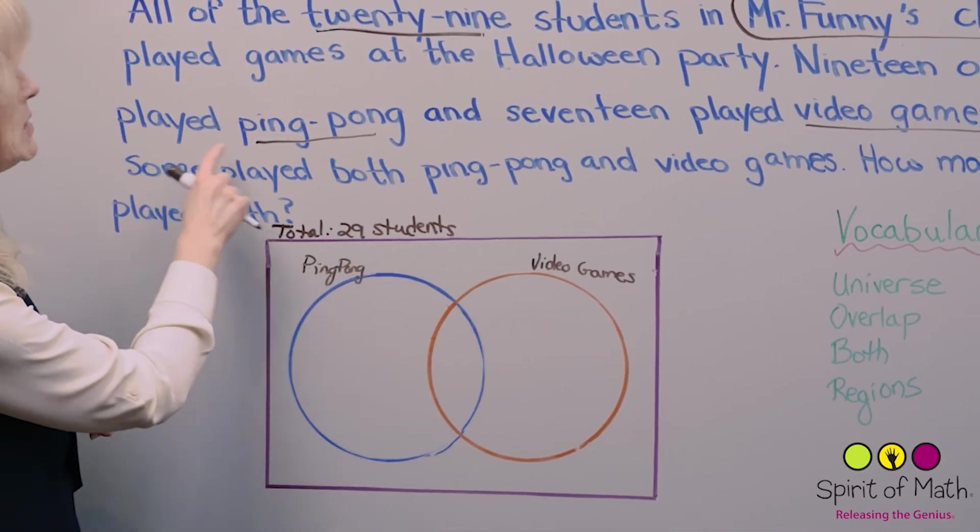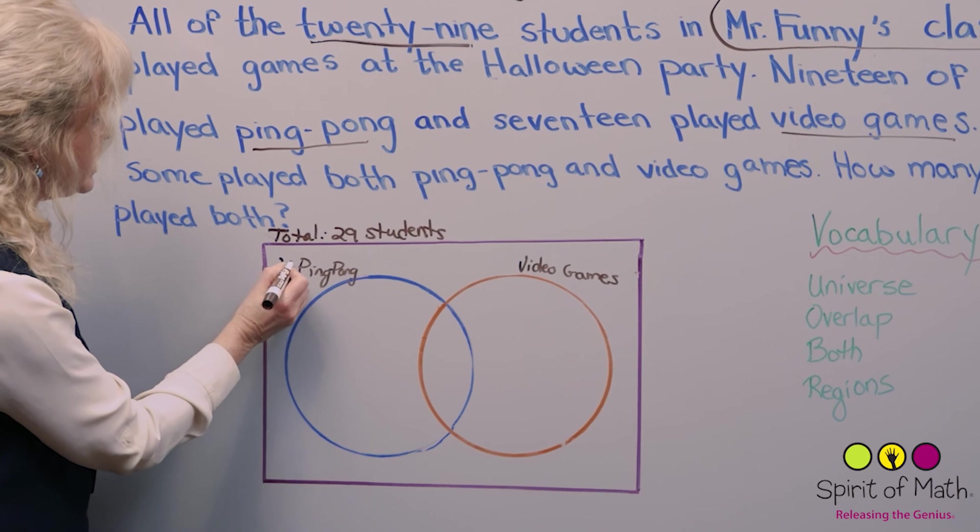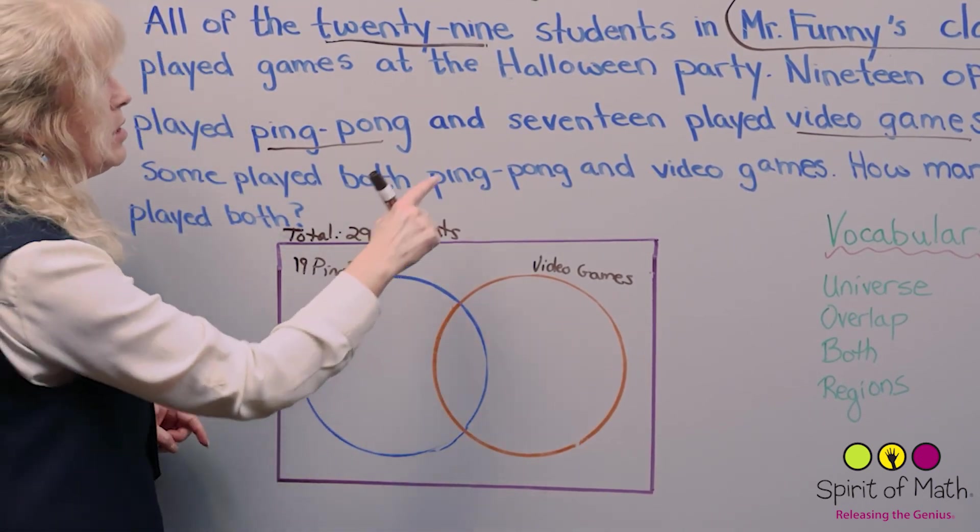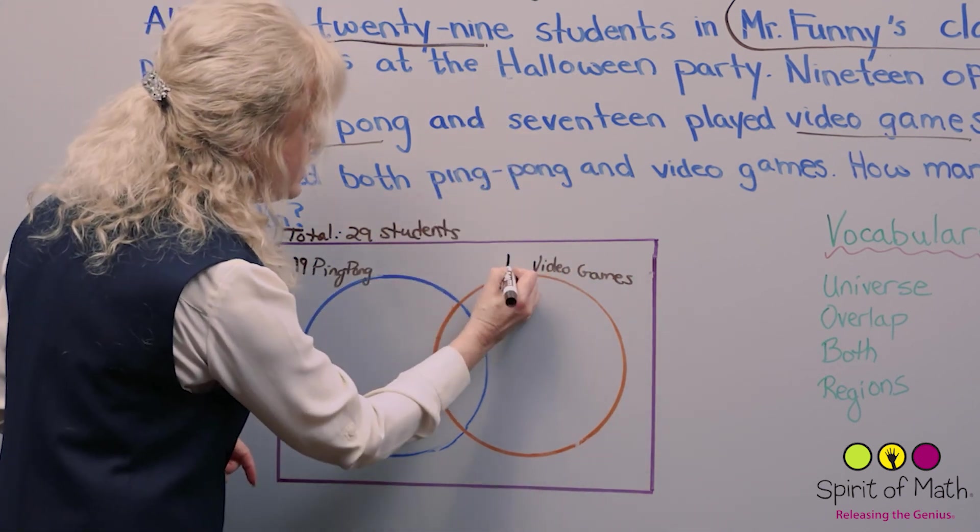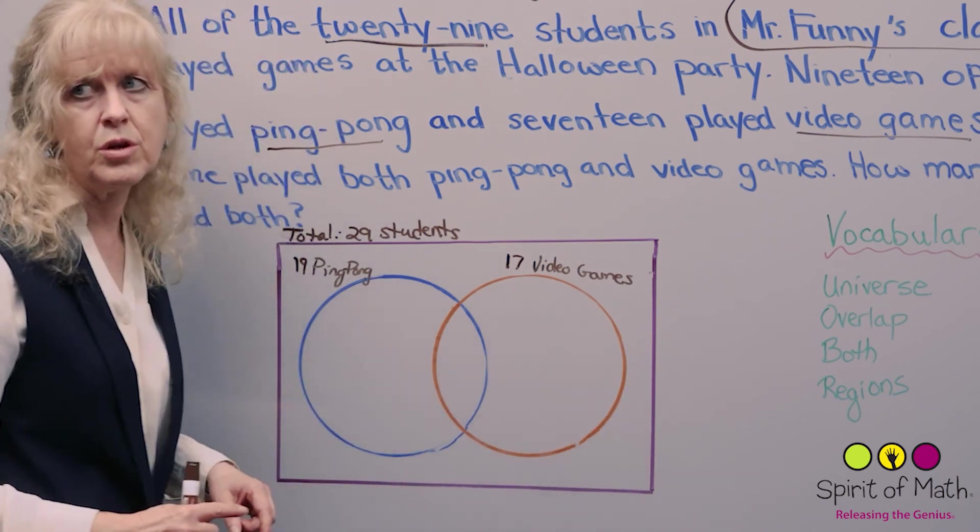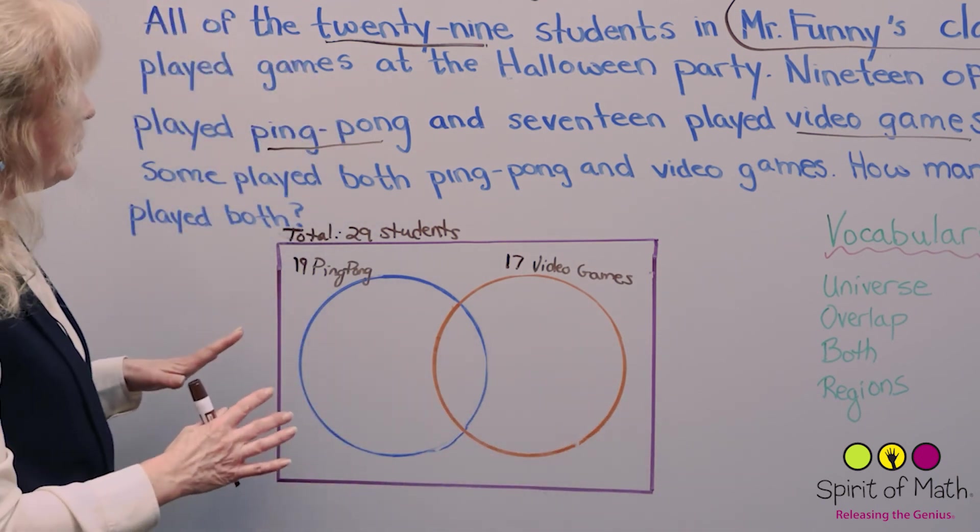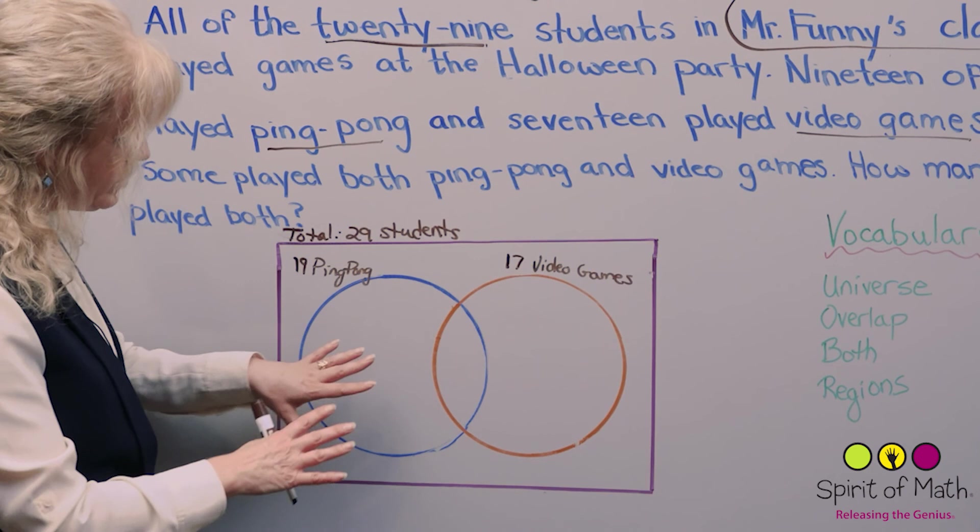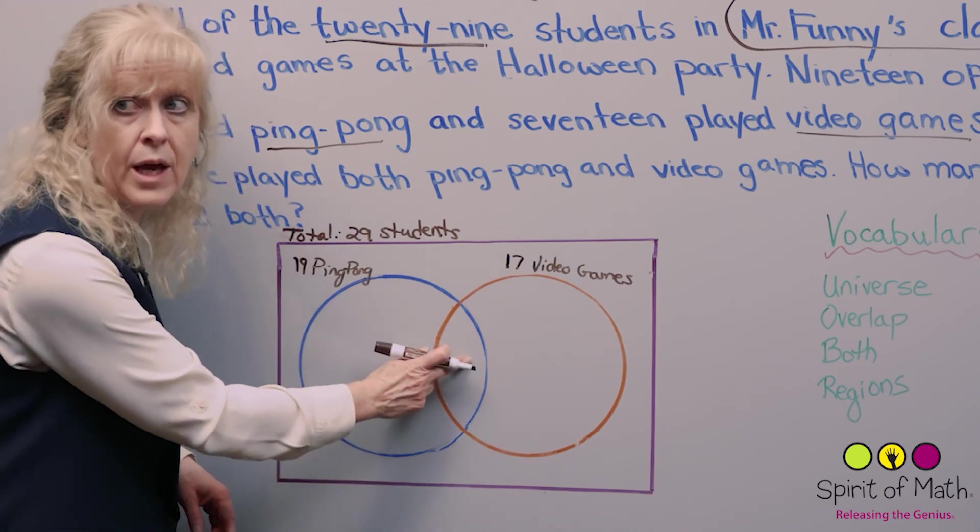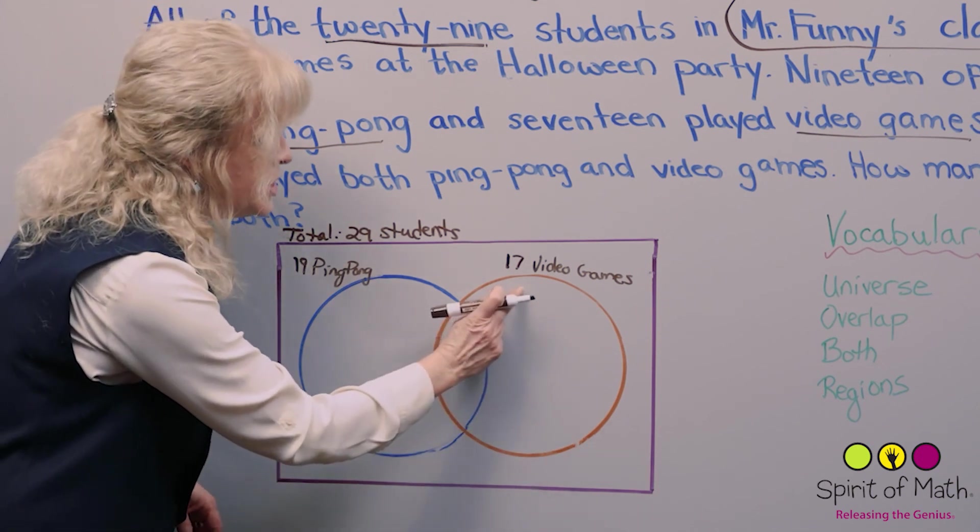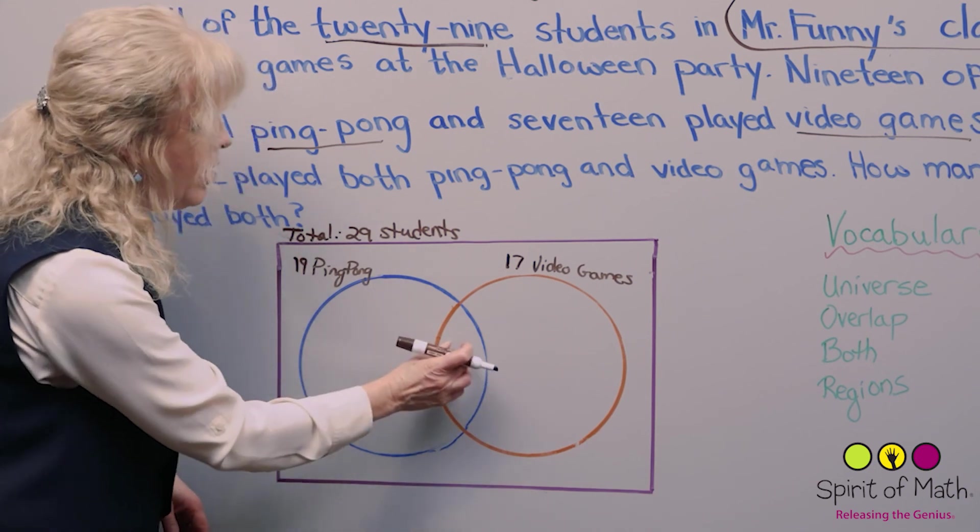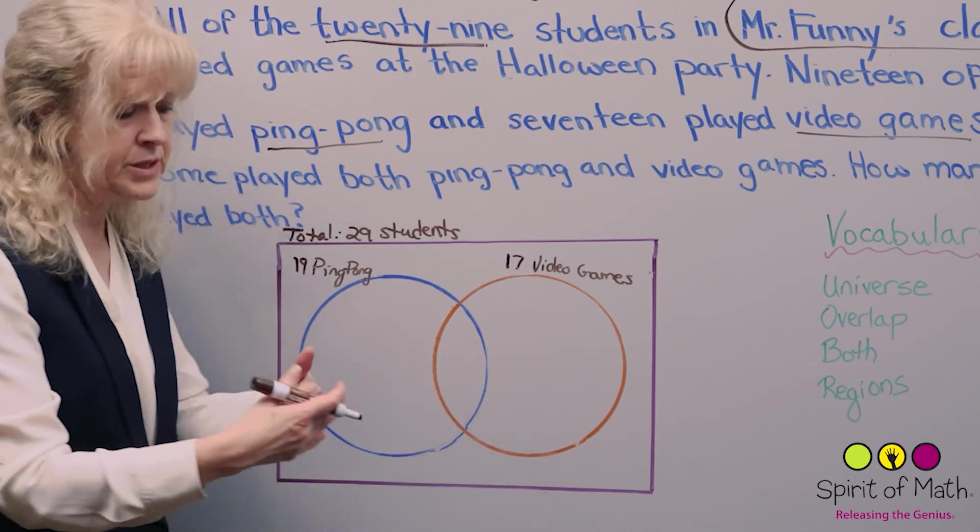For the ping pong, it says that there are 19. We're just going to label 19 are in this complete blue circle. Then there are 17 video games, so there are 17 kids who played video games. That's the complete orange circle. Now you're going to figure out how much were just ping pong, and that would be this area that does not overlap with the orange. Just video games is just this area. And this would be those kids who played ping pong and video games, the double up.